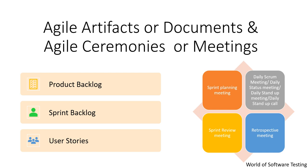In this lecture, let's discuss agile artifacts, also called agile documents, and agile ceremonies, also called agile meetings. The agile artifacts are: the product backlog, the sprint backlog, and user stories. The agile ceremonies are: the sprint planning meeting, the daily scrum meeting (also called daily stand-up), the sprint review meeting, and the retrospective meeting.